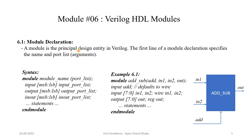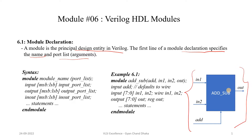A module is the principal design entity in Verilog HDL. Whatever design we are going to model using Verilog HDL, we have to declare a module for it. The first line of a module declaration specifies the name of the module and its port list. For example, we have a design working as an adder and subtractor — so how do we declare this design as a module?